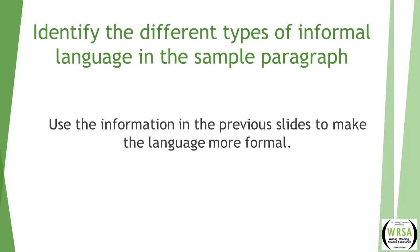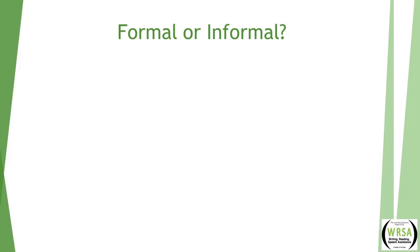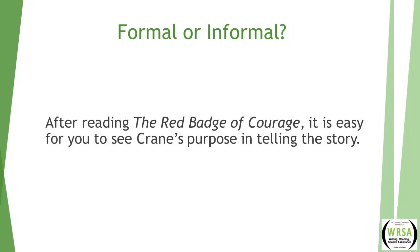Now let's move into transforming informal writing into formal writing. You need to be able to identify different types of informal language in a sample paragraph so you can look through your own writing and switch anything informal into formal language. For example: 'After reading The Red Badge of Courage, it is easy for you to see Crane's purpose in telling the story.' This is actually considered formal writing — it's clear, there's no slang, no contractions, and it uses specific language like 'purpose in telling the story.'